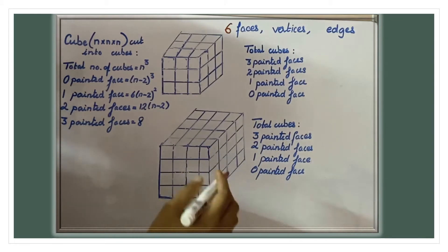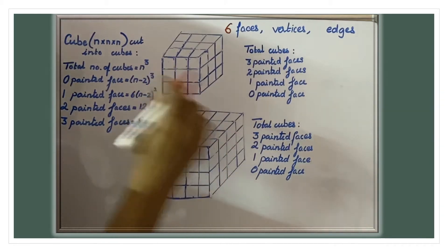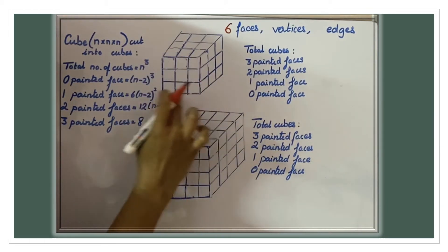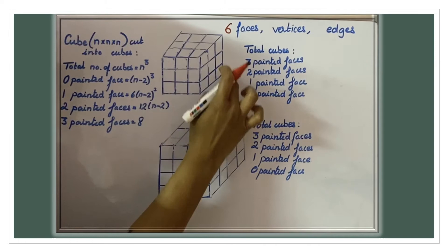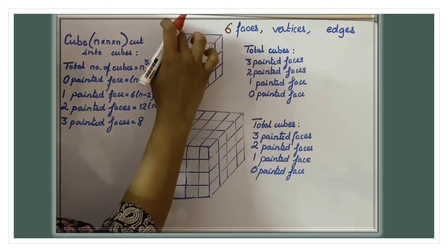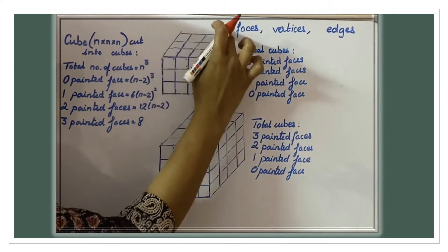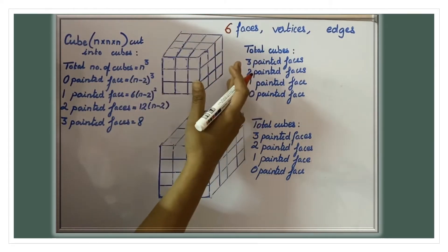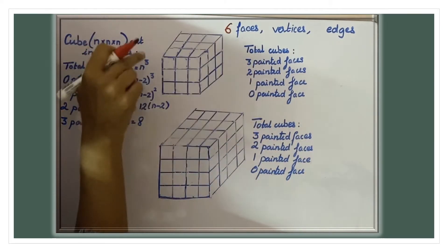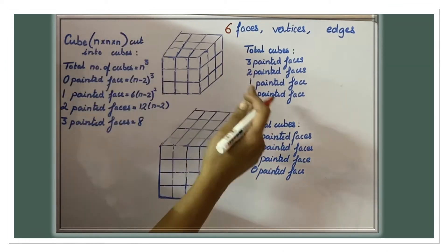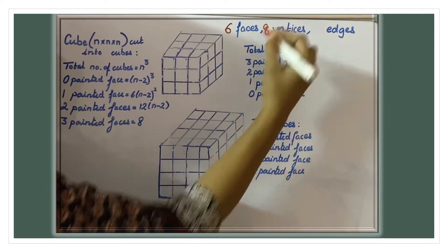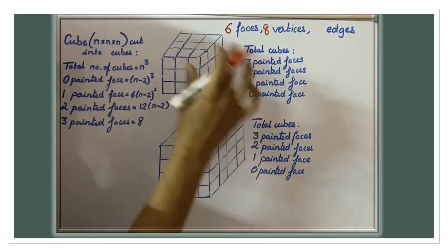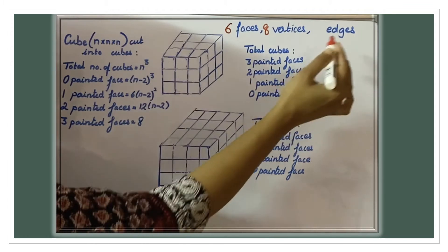The cube has eight vertices. We can see seven vertices; one is hidden. So total eight vertices, and it also has edges.